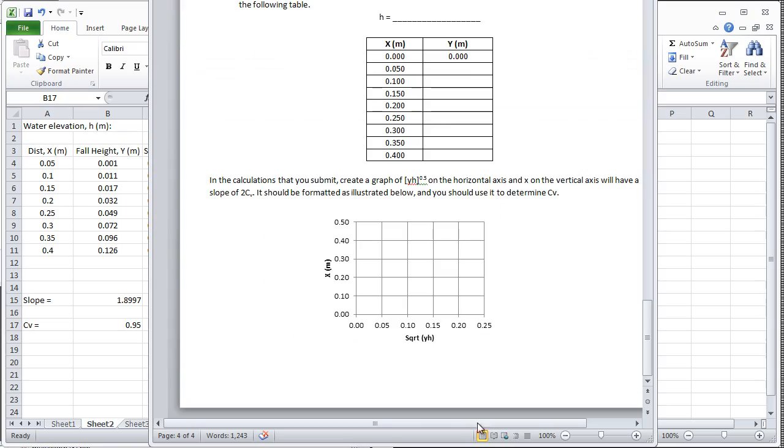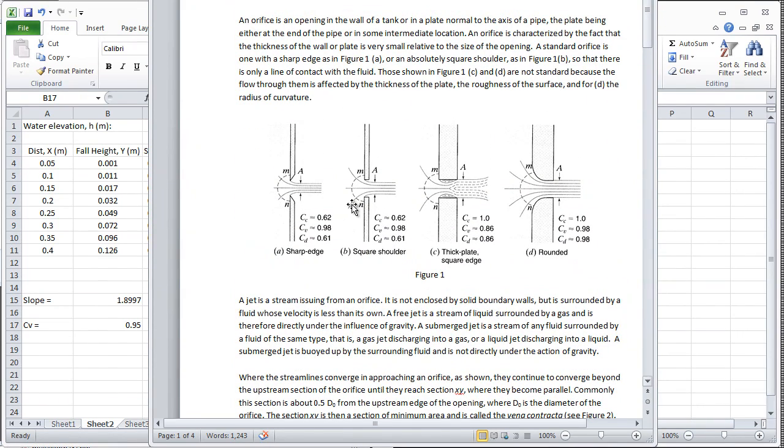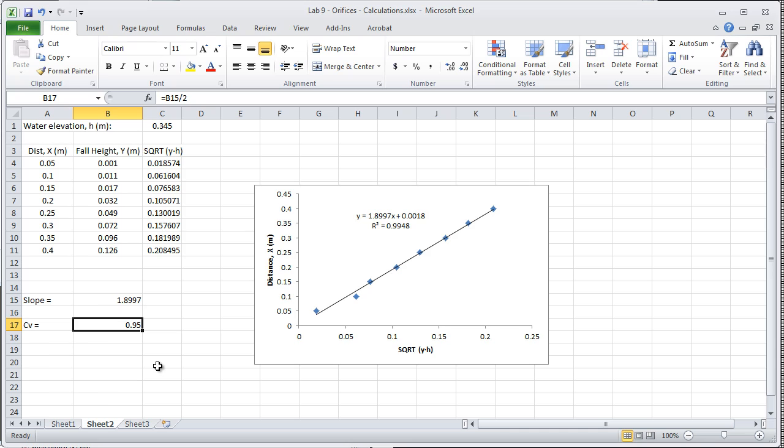If you compare that to the information that's given in the lab handout, it says that a typical value for C sub V, depending on how sharp it is - for a perfectly sharp edge orifice, we'd expect a C sub V of 0.98. If it was a thick plate and square edge, we'd have a C sub V of 0.86. So what we found is somewhere between the two. It's closer to a sharp edge, which is what we were going for, but it's not maybe as sharp as it could be at the edge. We need to get out our file and make it sharper to make that C sub V closer to 0.98. But still, it's pretty good.